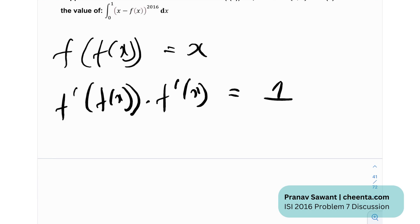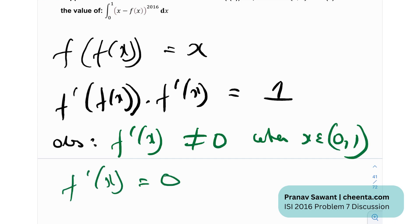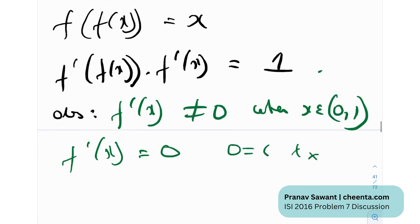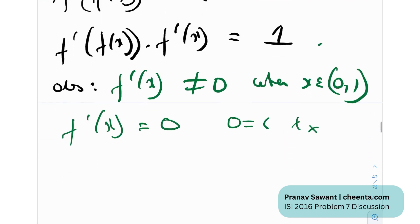Here I can make a very important observation. I can see that f'(x) is not equal to 0 when x belongs to (0,1). Why I can say that is if f'(x) was 0, then we would get 0 = 1 from this equation, and that obviously does not make sense. So f'(x) cannot be 0. Therefore, f has no minima or maxima in [0,1].